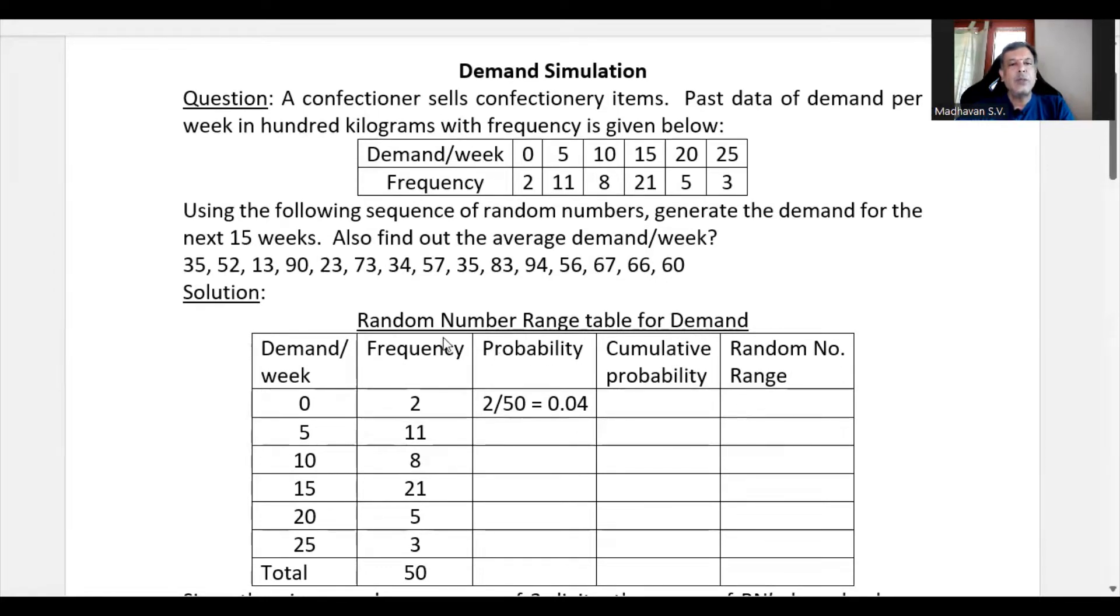Now the solution goes like this. First of all, we need to find out the random number range for each of the demand per week. So we are writing demand per week, the same thing and then the frequency. Now we need to calculate the probabilities for each of the demand. For example, for demand 0, the probability can be calculated as 2 divided by the total frequency, which is 2 divided by 50, which is 0.04.